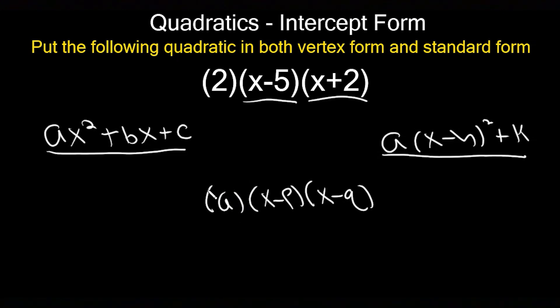Let's talk about how we're going to do this problem. I'm in intercept form, so let's put it in vertex form first. I already know my a value is 2, so I'm going to write down that a = 2.